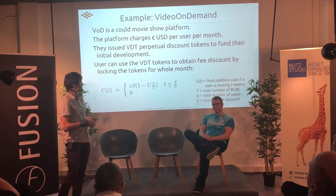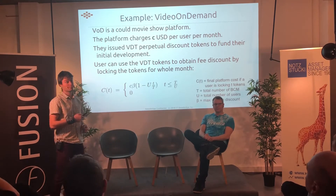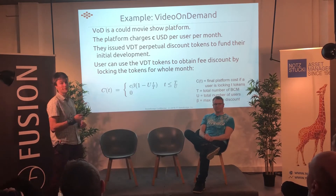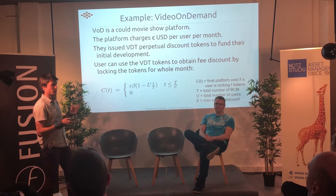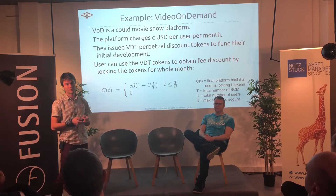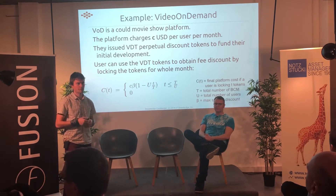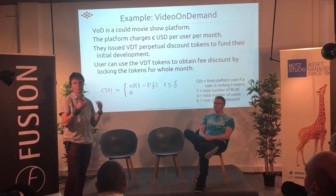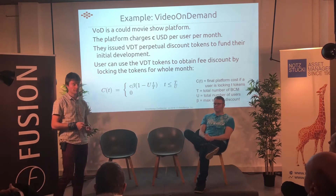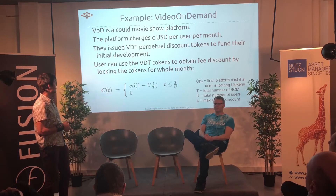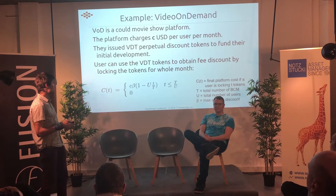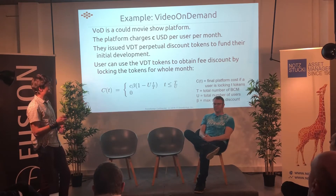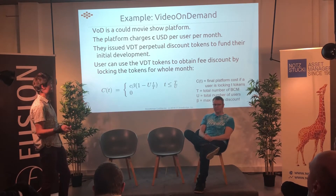Now a permanent discount token example. We are creating a video-on-demand platform, a cloud service, that charges a certain amount in US dollars per user per month — something like cable television at $50 a month. They want to invest in their project and are issuing VTT tokens, or video-on-demand tokens, as a perpetual discount token to fund their initial development.